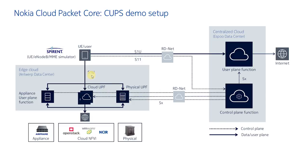These user plane functions all have local internet access in the Antwerp lab, so in the distributed data center. Both labs are connected to each other using RD-net, which is a Nokia internal network connecting labs together, and the SX interface on the control plane function in the centralized data center goes over RD-net to the user plane functions in the Antwerp lab. We also have Spirent Landslide, which is simulating the UE and the MME and the eNB. This Spirent Landslide is located in the Antwerp lab in Belgium, close to the distributed data center.